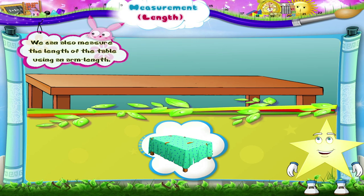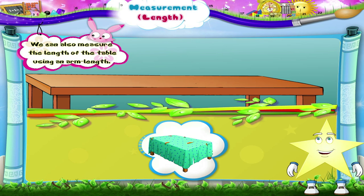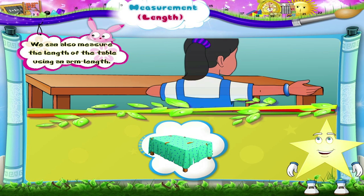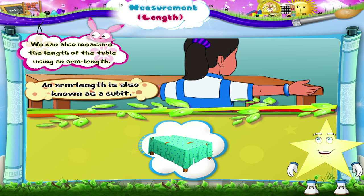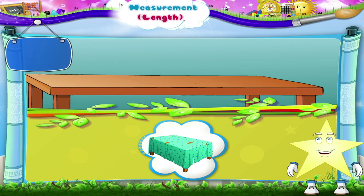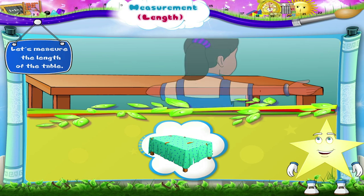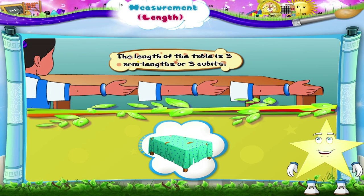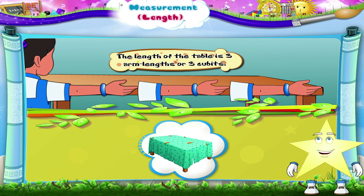Hey Starry, we can also measure the length of the table using an arm length. An arm length is also known as a cubit. Let's measure the length of the table. The length of the table is three arm lengths or three cubits.